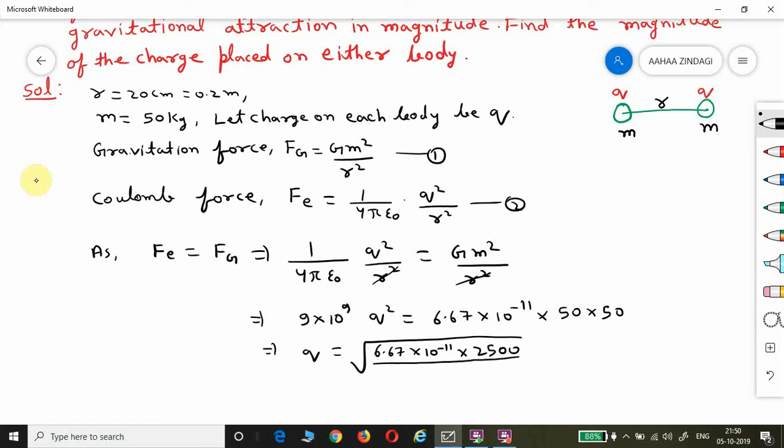This charge is in coulombs. When we solve this, the value of q is 4.3 times 10 to the power minus 9 coulombs.